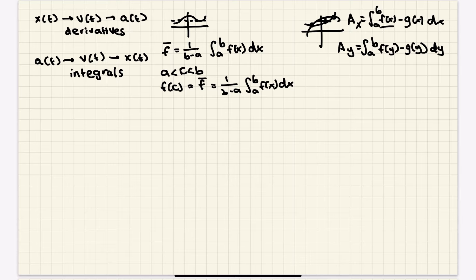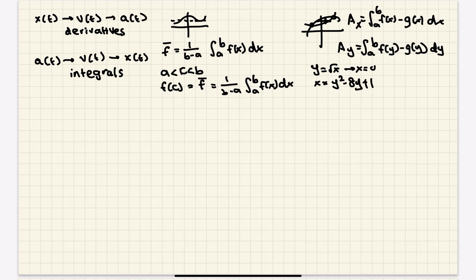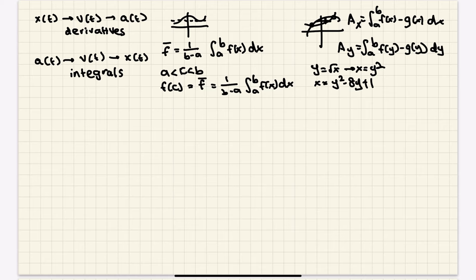Obviously it's not the same exact function — it's going to be the inverse function for y. Always make sure what you're using. If you're given something like y equals square root of x and x equals y squared minus 8y plus 1, you can just write this as x equals y squared and make sure you limit it on the domain, because x equals y squared is the entire parabola. We only want the top part, so you can write in terms of y and do it from there.